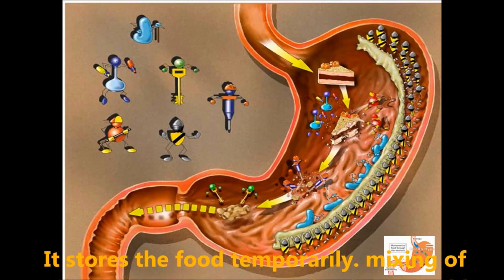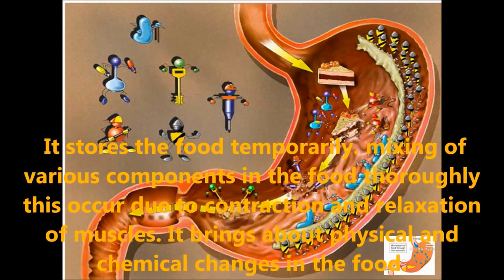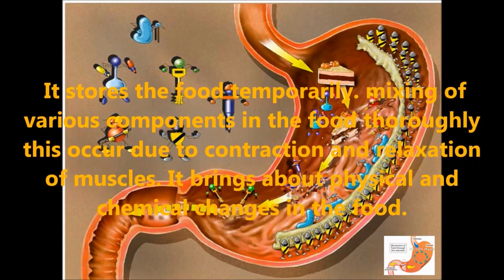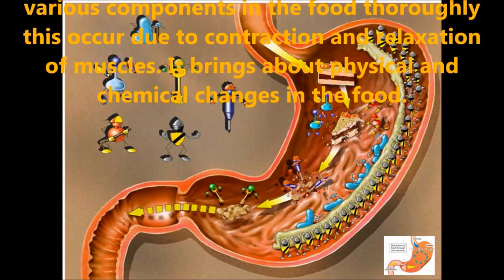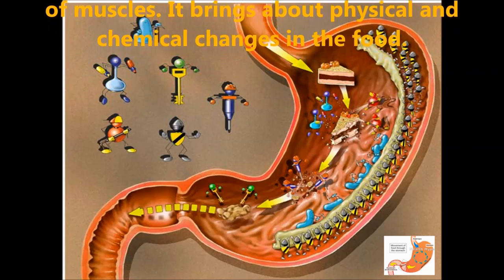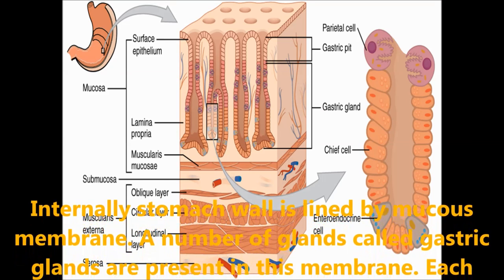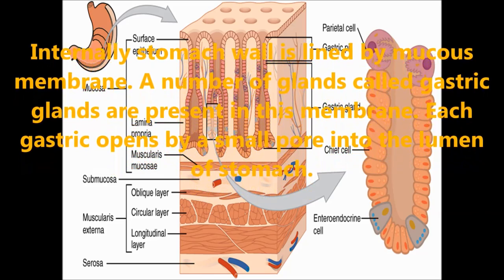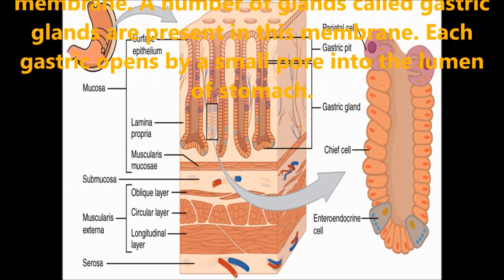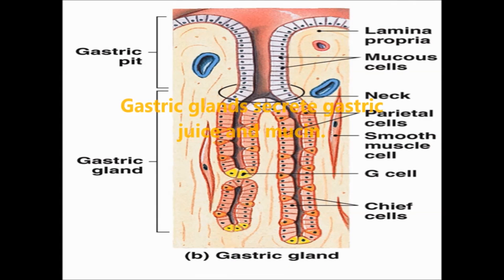The stomach has three major important roles: it stores food temporarily, mixes various components of the food, and brings about physical and chemical changes in the food due to contraction and relaxation of muscles. Internally, the stomach wall is lined by a mucous membrane containing a number of glands called gastric glands, which secrete gastric juice and mucin.